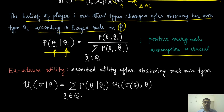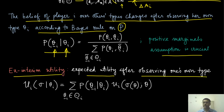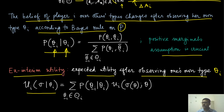Based on this, the changed belief of player i when he observes his own type theta_i allows us to define the interim utility, which is the expected utility after it has observed its own type. For player i it will be theta_i. Now I can define the same utility u_i of sigma given theta_i, after observing theta_i.